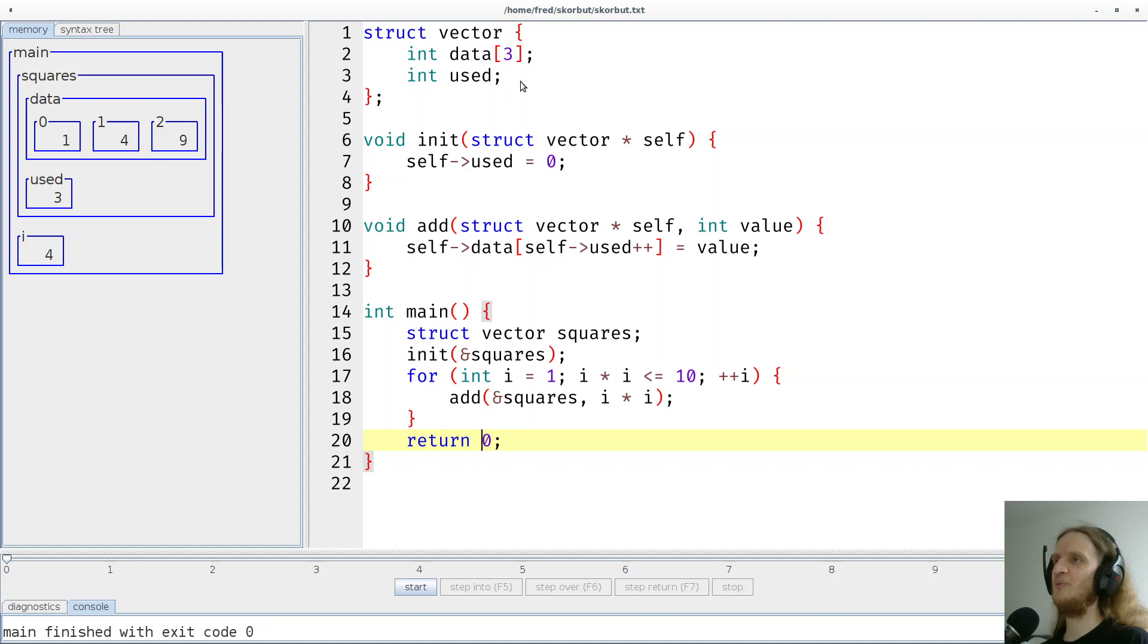Now what happens if I increase the 10 to 100, start the program again and say step return, which will run main to completion. Then it says index three out of bounds three. That happened because here in line 11, we try to store the value 16 at index three. But in an array of size three, there is no index three, right?